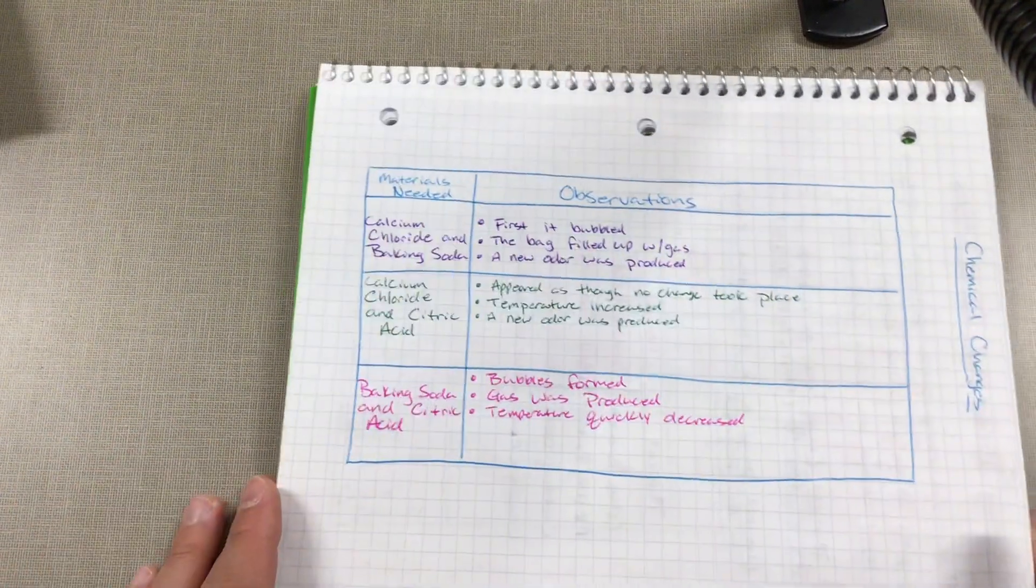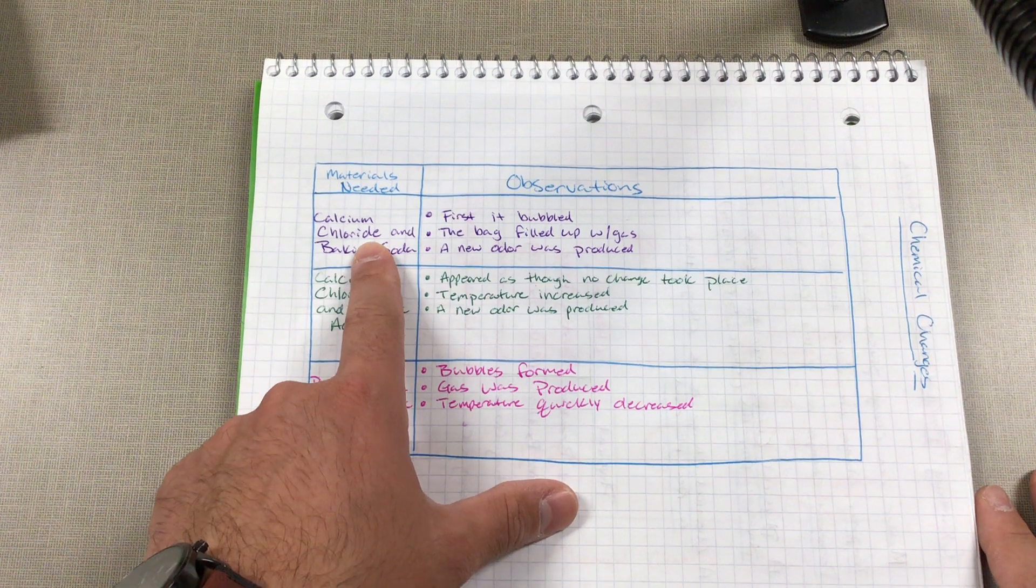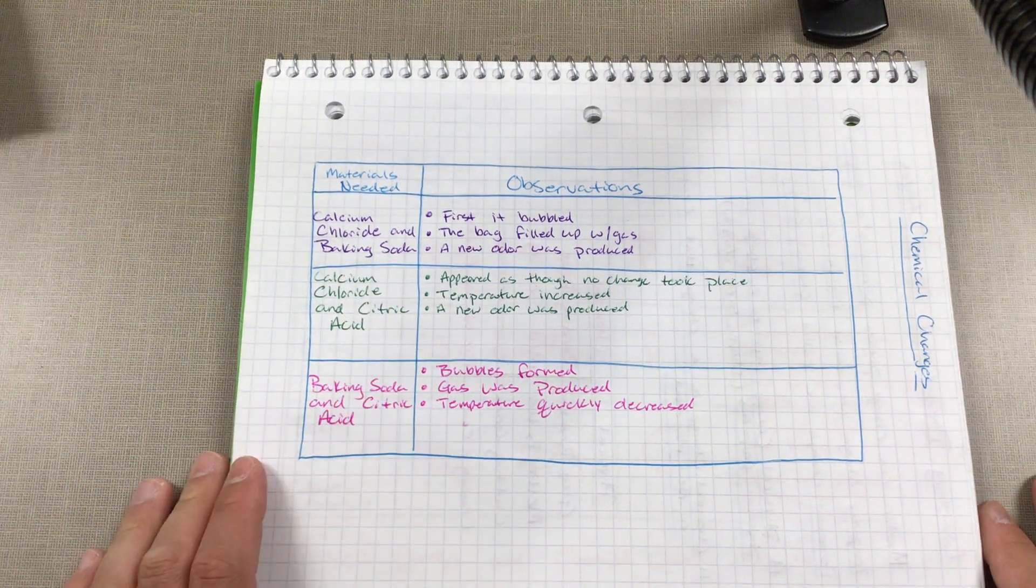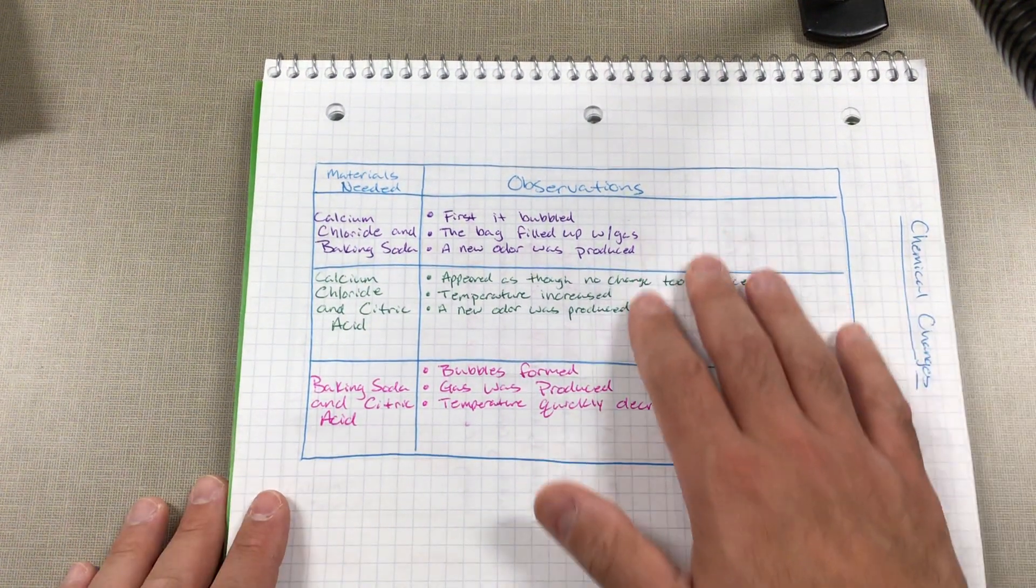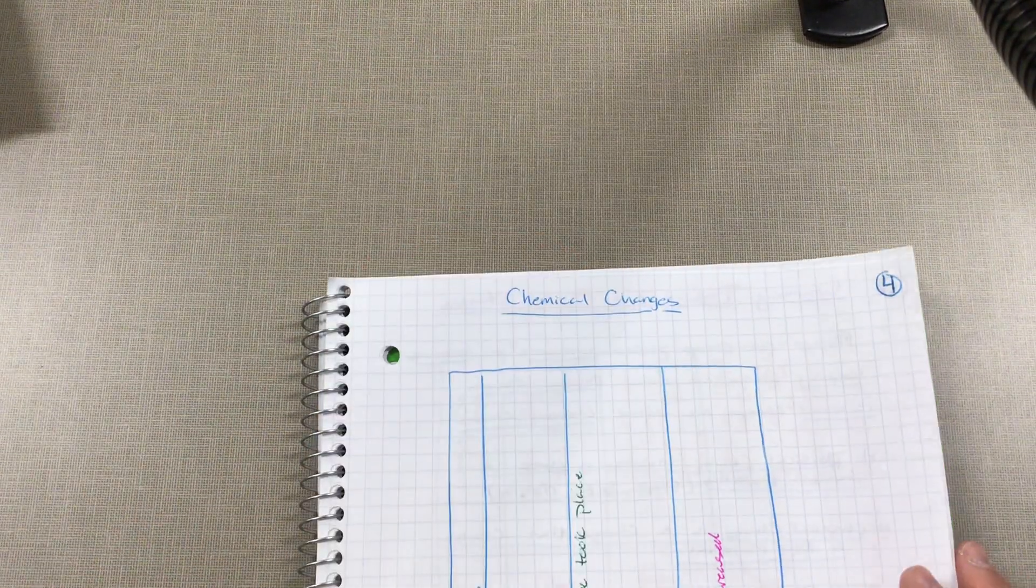So page four was chemical changes. We had different bags with a mix of either calcium chloride, baking soda, or citric acid mixed together. We added some water and we made some observations that we saw.